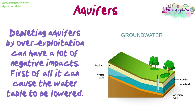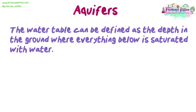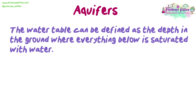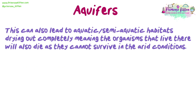Depleting aquifers by over-exploitation can have lots of negative impacts. First of all, it can cause the water table to be lowered. The water table can be defined as the depth in the ground where everything below is saturated with water. Lakes and rivers are often replenished by groundwater, so a lowering of the water table may lower the level of water in rivers and lakes too. This can also lead to aquatic or semi-aquatic habitats drying out completely, meaning the organisms that live there will also die as they cannot survive in the arid conditions.